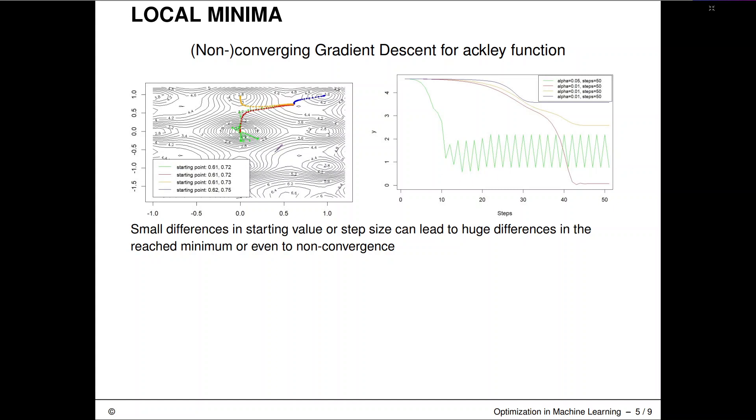This is the green trajectory where you can see the zigzagging or oscillating behavior. It's zigzagging in Y-space, not in X-space. You can see some of these local minima are much worse than others. This can lead to huge differences in the reached objective value.